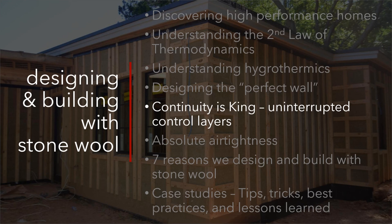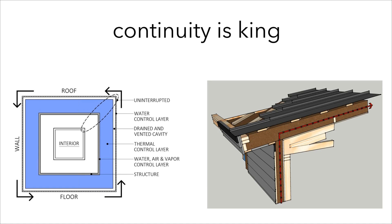So continuity — without taking this perfect wall and continuing it to the roof and to the floor, you can risk having a failure in that enclosure. As you're building up these layers, everywhere that there's a potential for a break in that layer, you have to address it and make sure that everything stays continuous. Here we are with those control layers shown, and this is just a schematic of what I'm talking about — the wall, the roof, and the floor, all being continuous and wrapping the entire structure like an igloo, like a cooler. This is our perfect assembly.